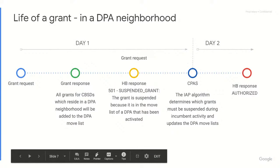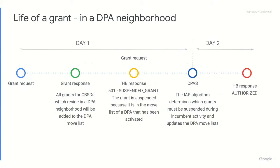Let's move on to the next scenario. In this scenario the CBSD is in one or more DPA neighborhoods. In this case the grant will be added to the DPA move list corresponding to all these DPA neighborhoods on day one. If one or more of these DPAs gets activated, the grant will be suspended.